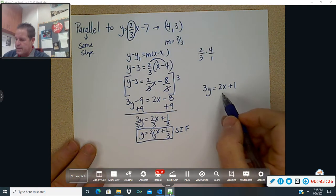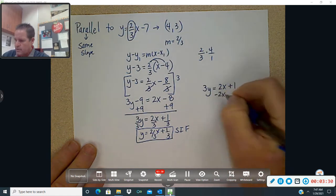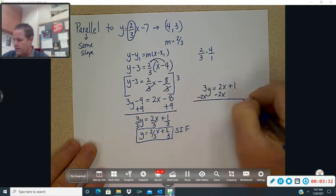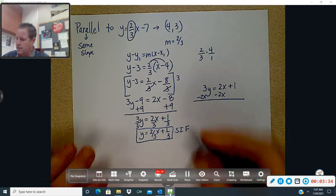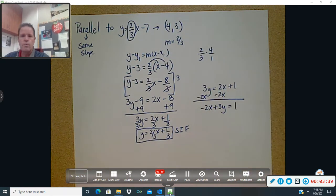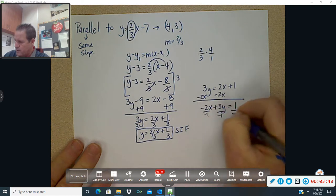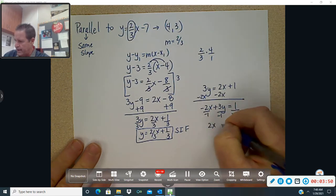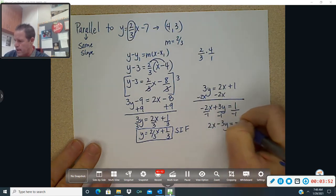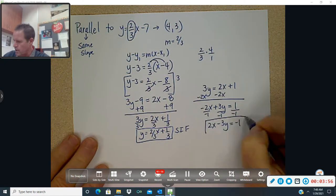All right, so now let's get standard form out of this, and that's where x and y are on the same side. So we want to subtract 2x to the other side. Okay, I did that. So I have negative 2x plus 3y equals 1. And now you do not want a negative in front of x, so divide everything by negative 1. And you've got 2x minus 3y equals negative 1. And that would be your standard form.